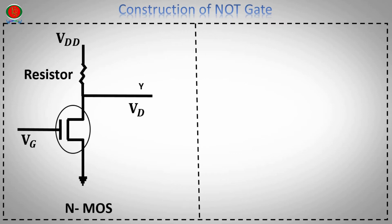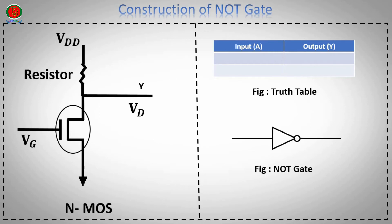VD is the transistor output. NOT gate truth table and symbol.